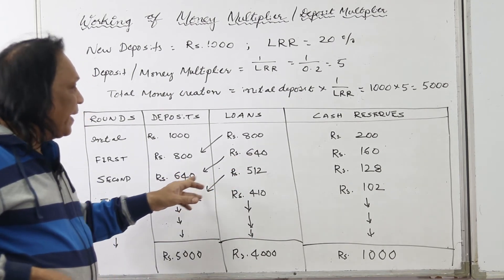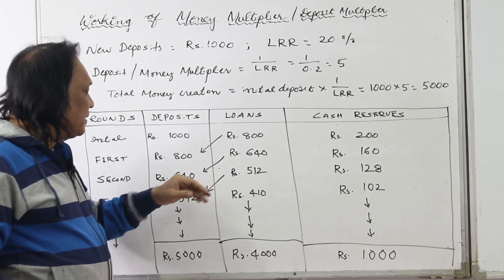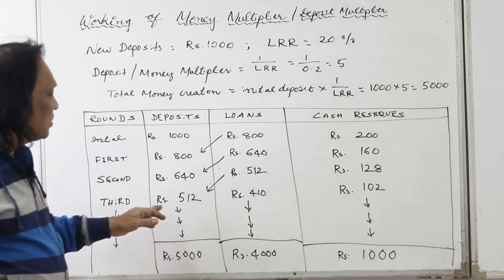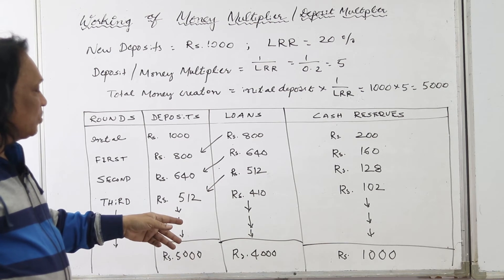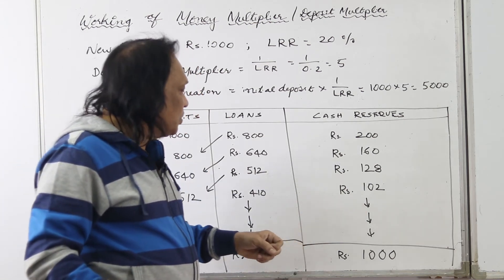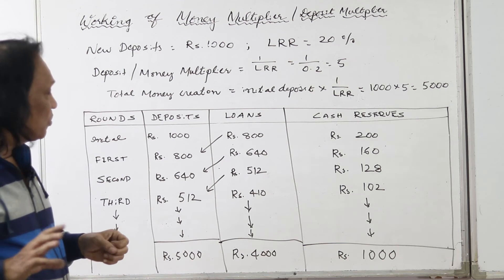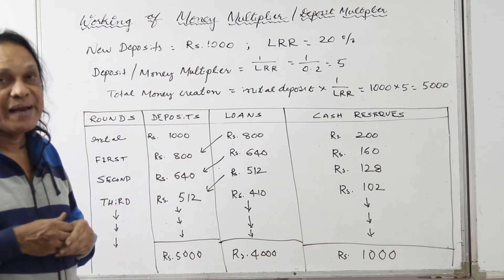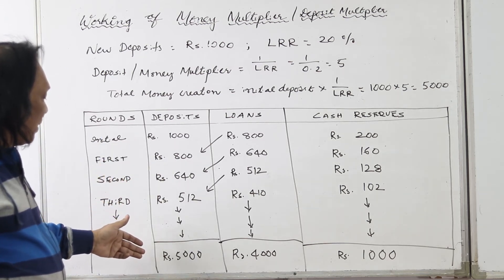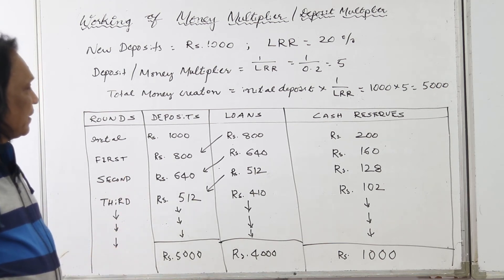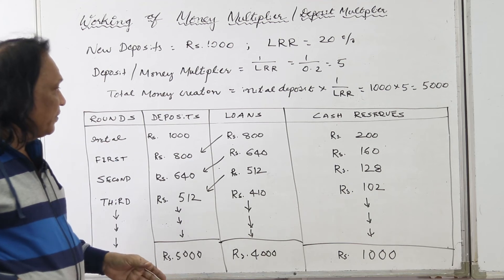In the third round, 640 comes back to the bank; the bank keeps 128 as reserves and gives the remainder as loans. In the next round, 512 rupees come in as deposits; 20% (about 102 rupees) is kept as reserve and the remaining 410 is given as loans. This process continues across many rounds until the initial deposit of 1,000 rupees is fully exhausted. At the end of all rounds, total deposits created equal 5,000 rupees.